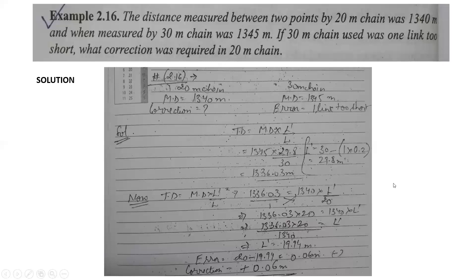The chain was actually one small link short. So how much error came out? Look — the 30-meter chain has a minus error because it is a short error. There is one link. To convert it to meters: one link equals 0.2 meters.